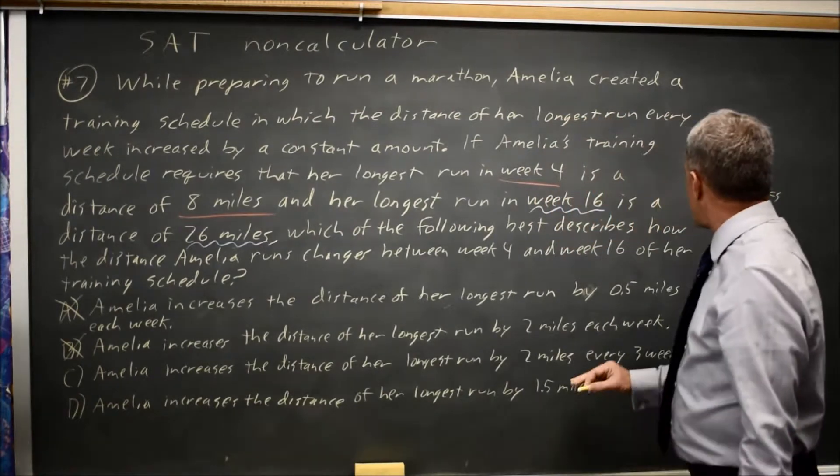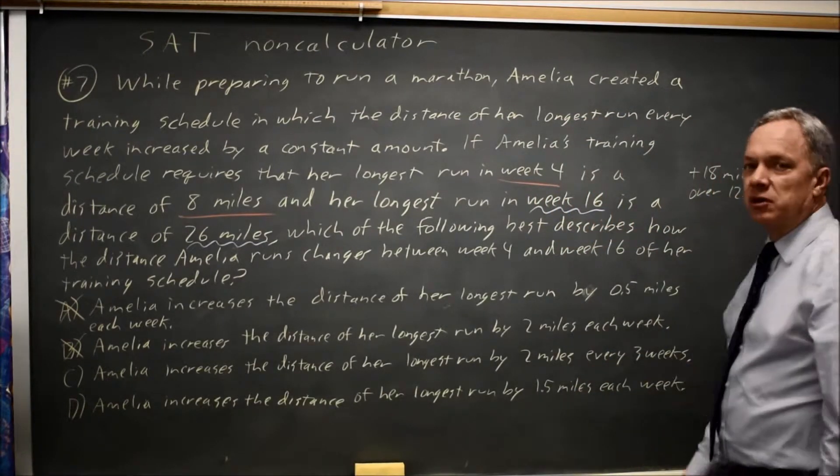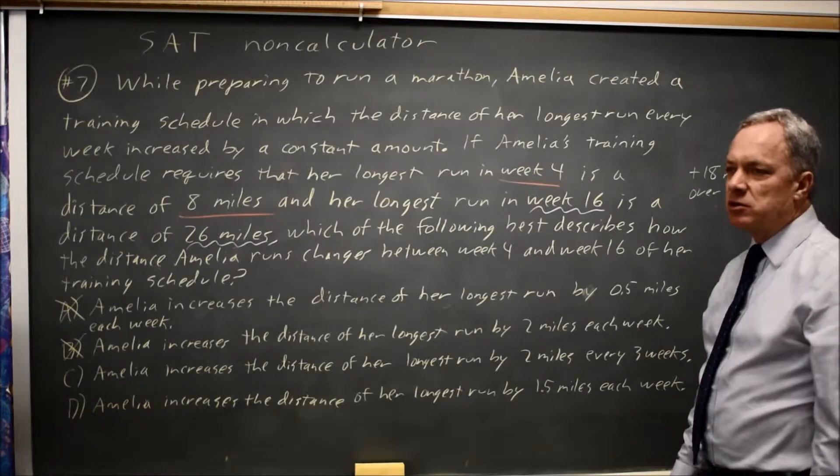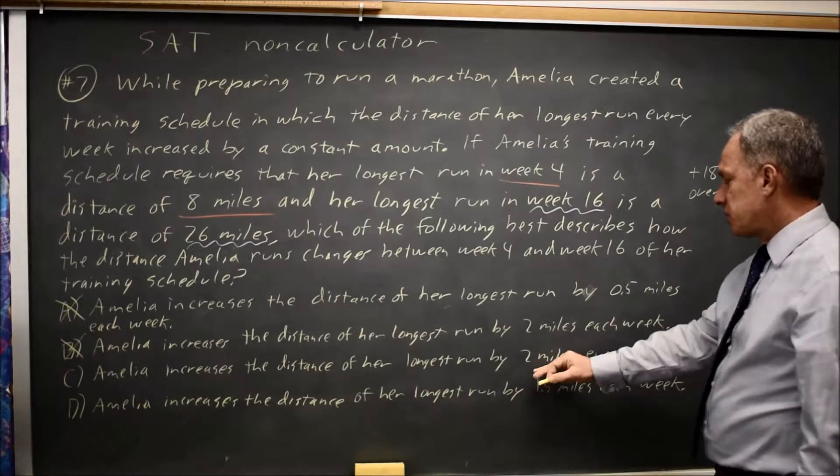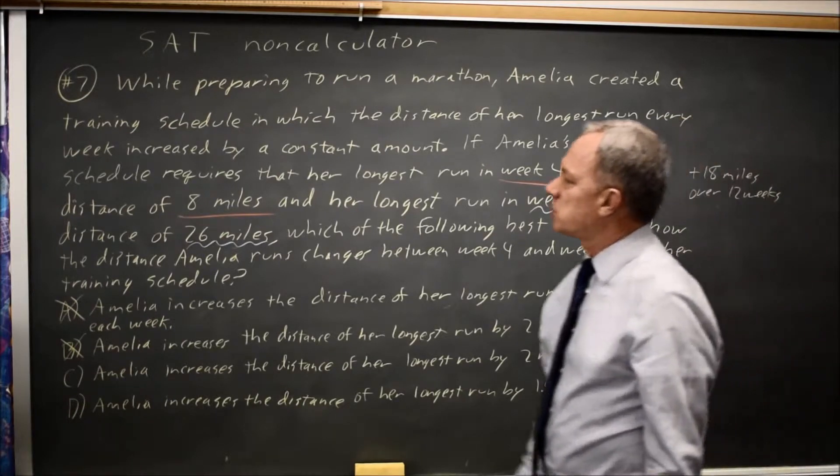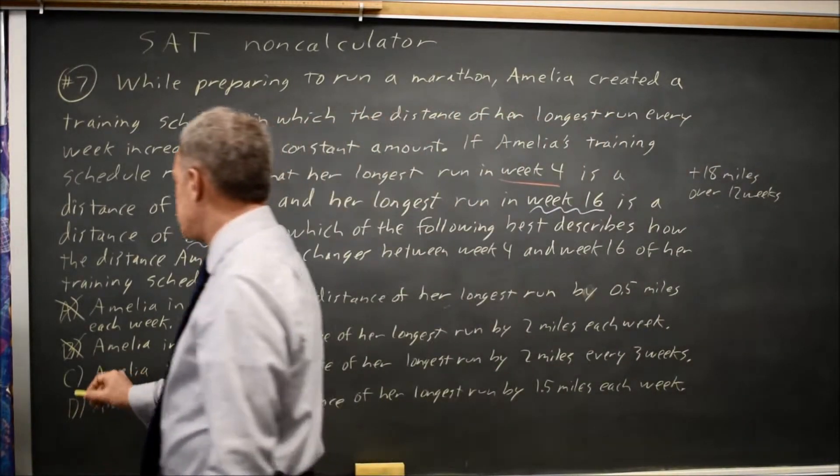Choice C, two miles every three weeks. Well, there's twelve weeks in her training plan, so that's four three-week periods, so she would add two miles times four is eight miles. Starting at eight, that only takes her to sixteen miles, so that didn't work.